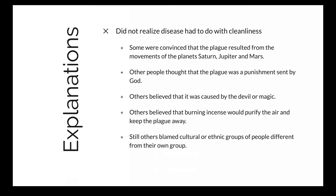So why did this happen? Science in the 1300s wasn't very advanced. People didn't know the disease was related to cleanliness, rats, and fleas. They had no clue that infected fleas biting people were spreading the disease. So they started looking for other explanations. Some were convinced it was the movement of the planets — in the late 1340s, Saturn, Jupiter, and Mars were all lined up together, and people pointed to that alignment.